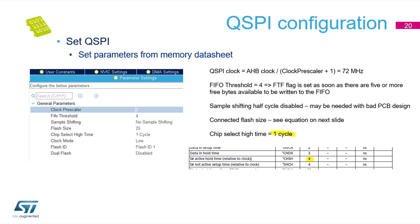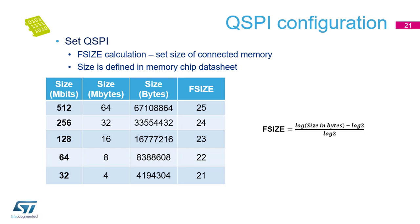Sampling shifting may be needed with a bad PCB design — it delays data sampling by half a cycle. Flash size must be configured in line with the memory; the equation is on the next slide. Chip select time is a value from the memory datasheet. As you can see, there are 4 nanoseconds in our datasheet, meaning one cycle when Quad SPI runs at 72 MHz. Here you can see the flash size calculation, and we are sharing a table with the most commonly used memory sizes.